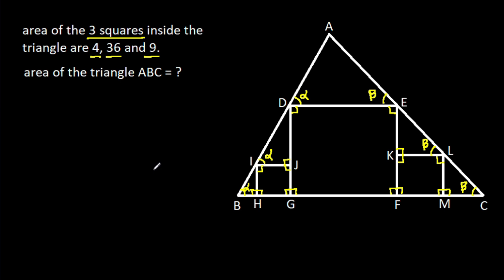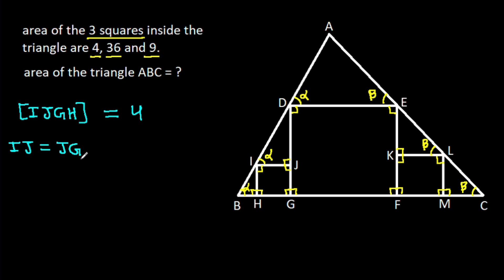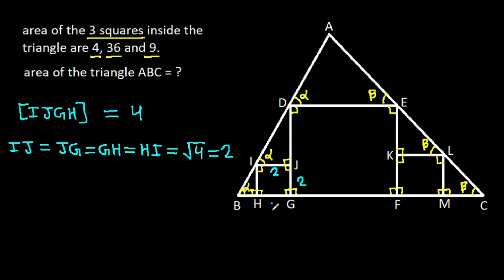Now we have area of square IJGH is 4. So IJ will be equal to JG, equal to GH, equal to HI, which is √4 = 2. So IJ is 2, JG is 2, GH is 2, and HI is 2.